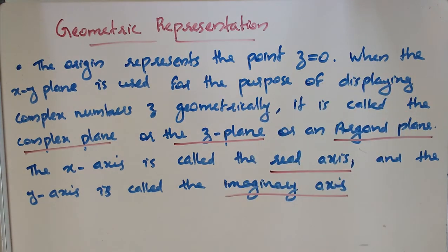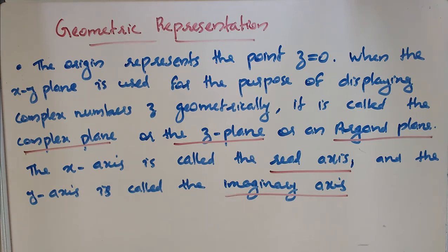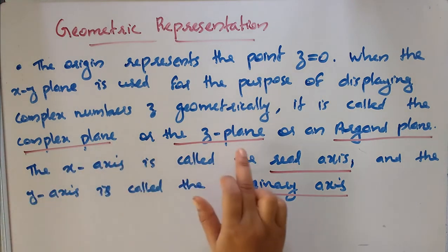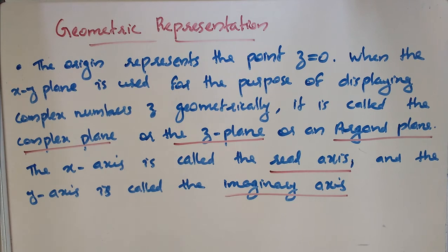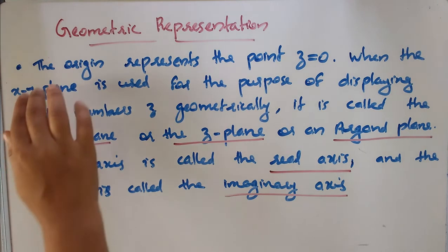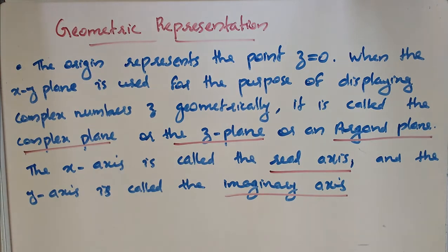The xy plane is used to represent complex numbers z geometrically. The origin represents the point z = 0. The xy plane used for this purpose is called the complex plane, or the z-plane, or the Argand plane.